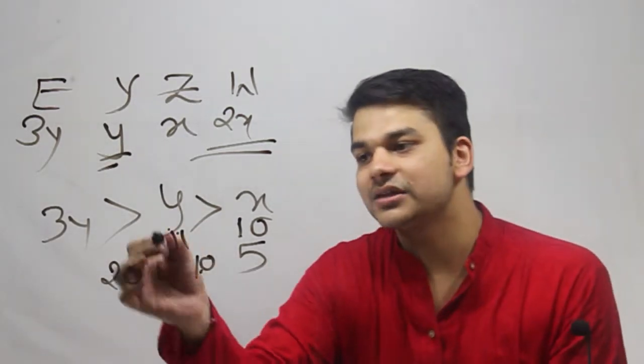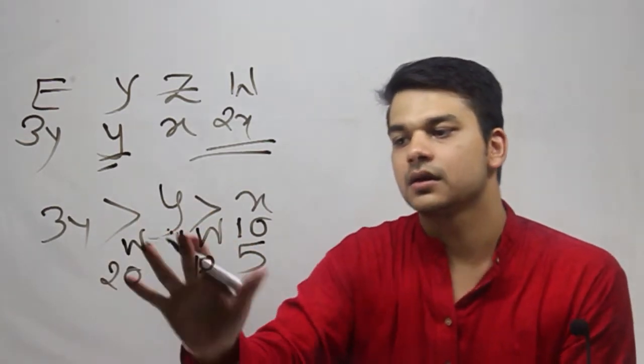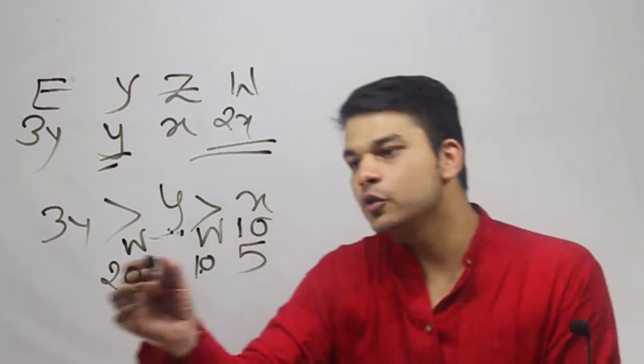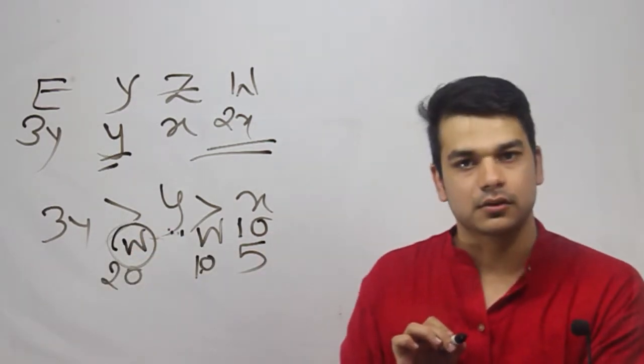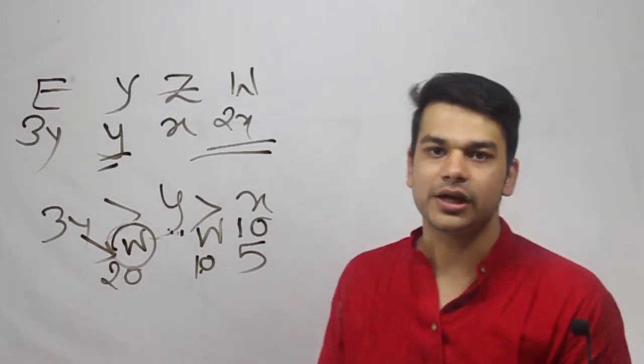So this means that Vahida will either be here or here. Option B says, Ali is older than Vahida. Now if you look, even if Vahida is placed here, Ali is always going to be older than Vahida. So the answer is going to be B.